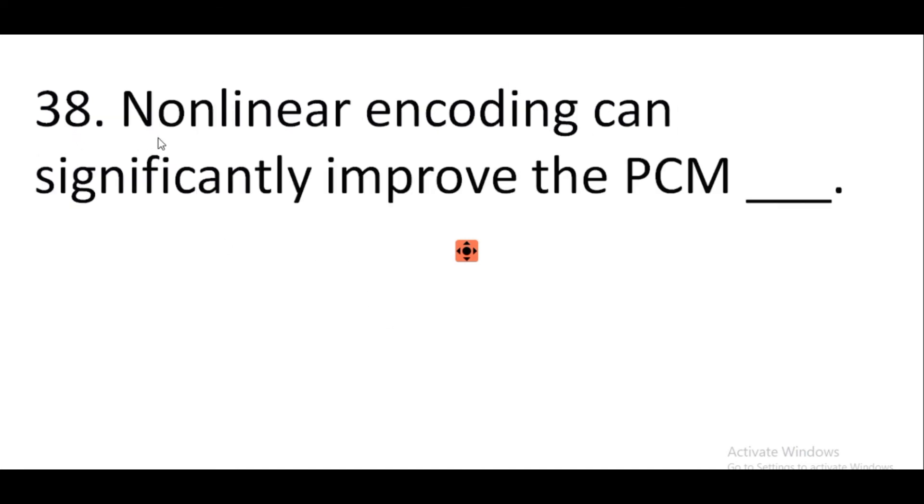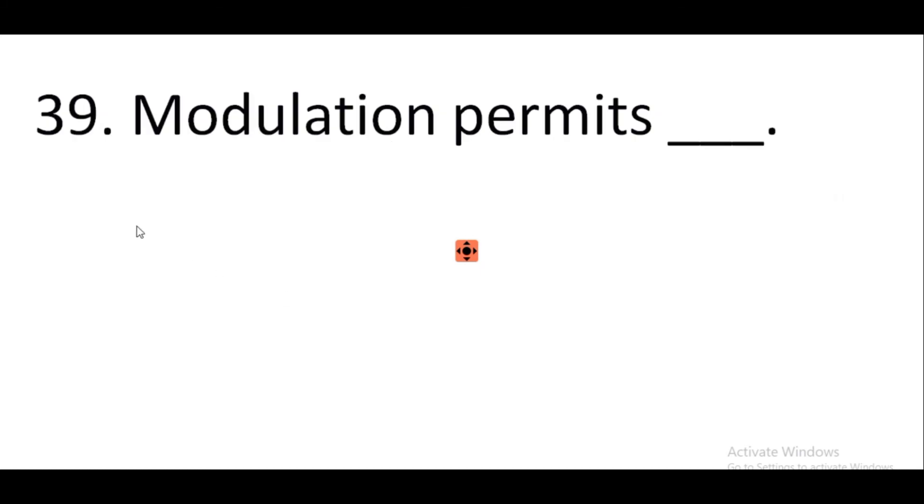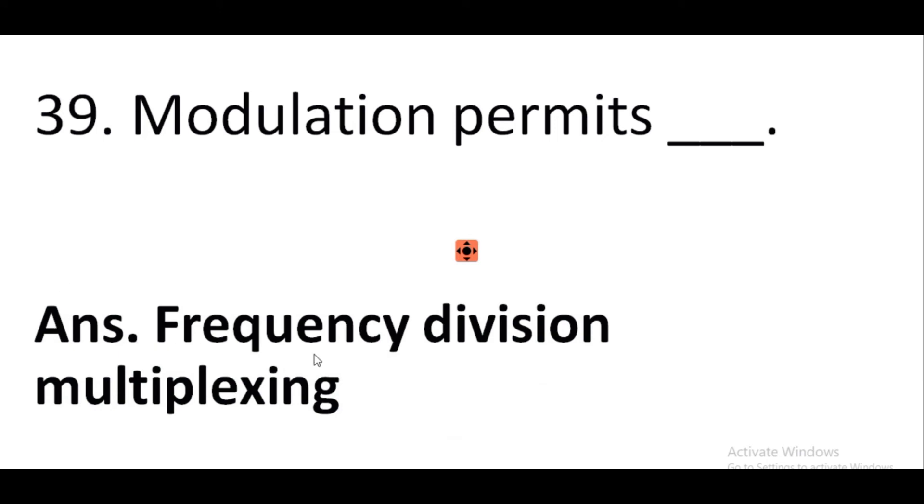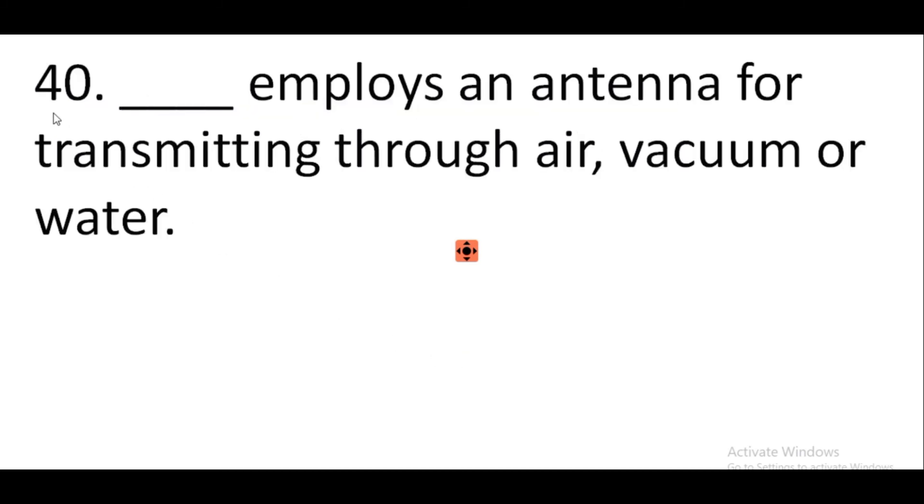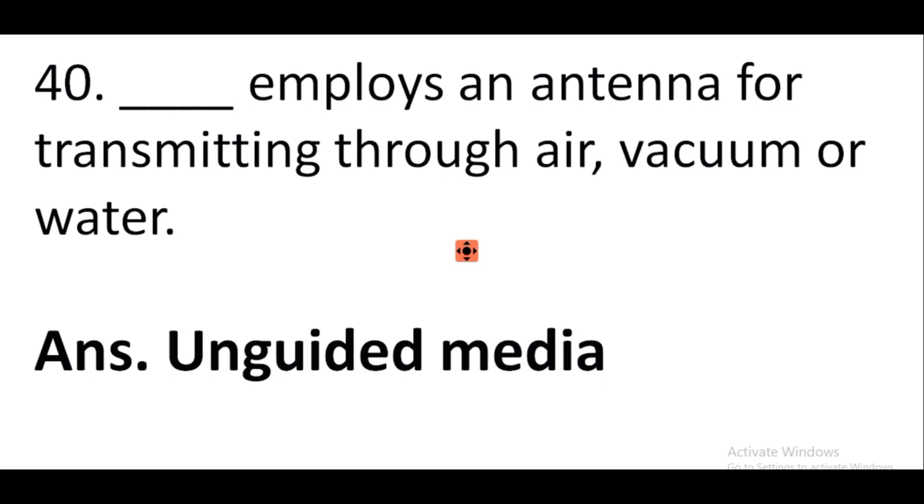Question number 38: Non-linear encoding can significantly improve the PCM SNR ratio. Question number 39: Modulation permits frequency division multiplexing. Question number 40: Unguided media employs an antenna for transmitting through air, vacuum, or water.